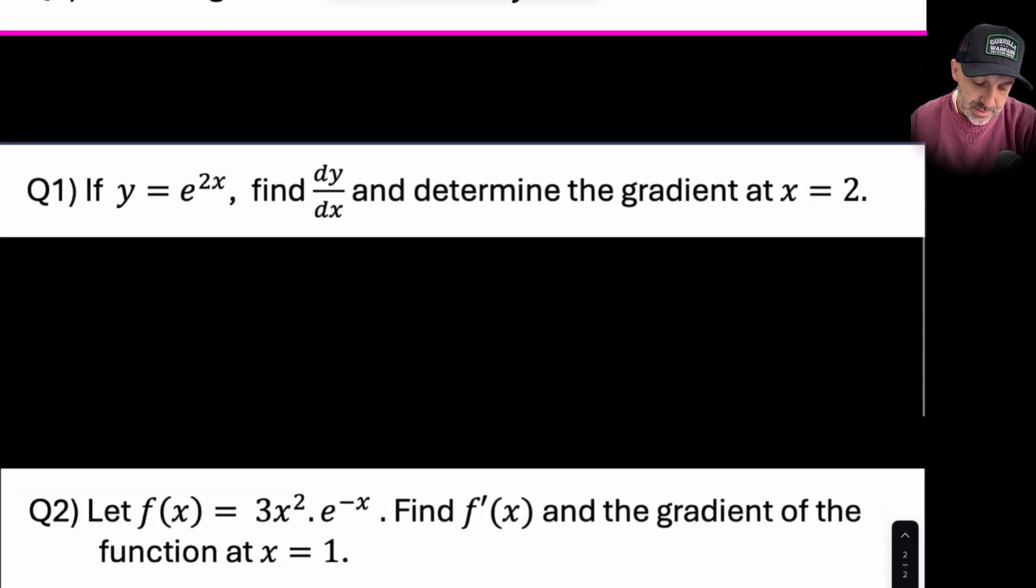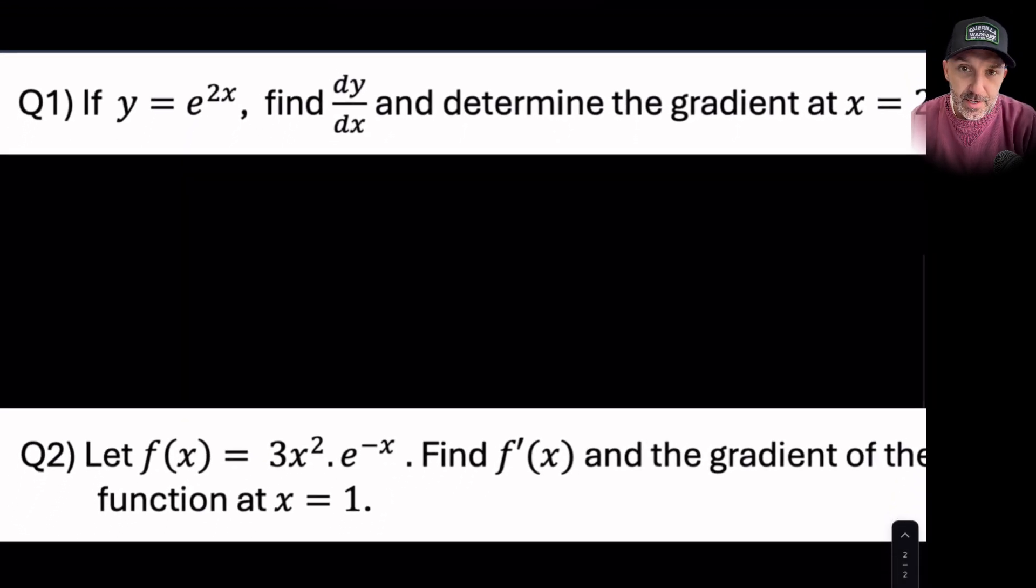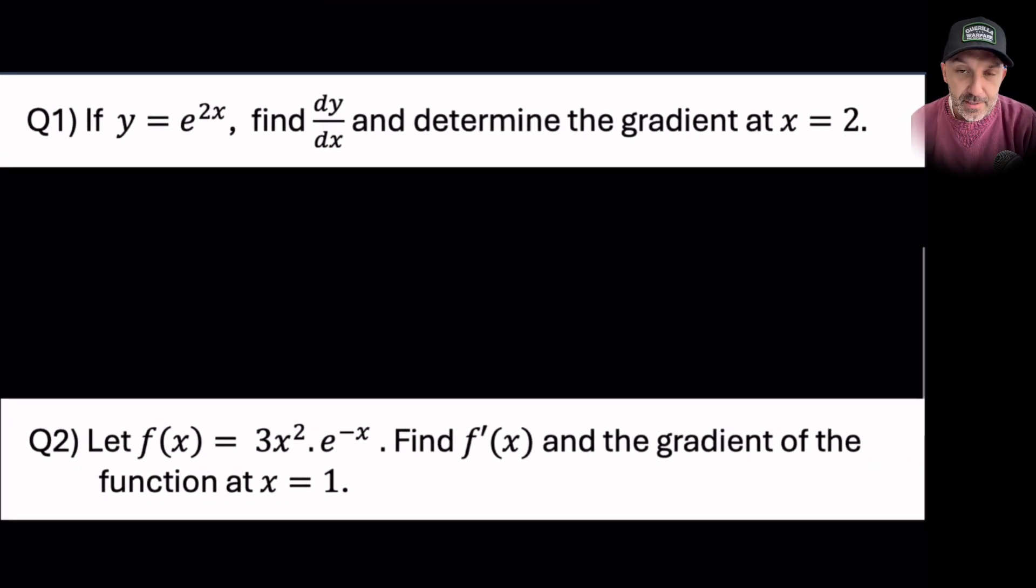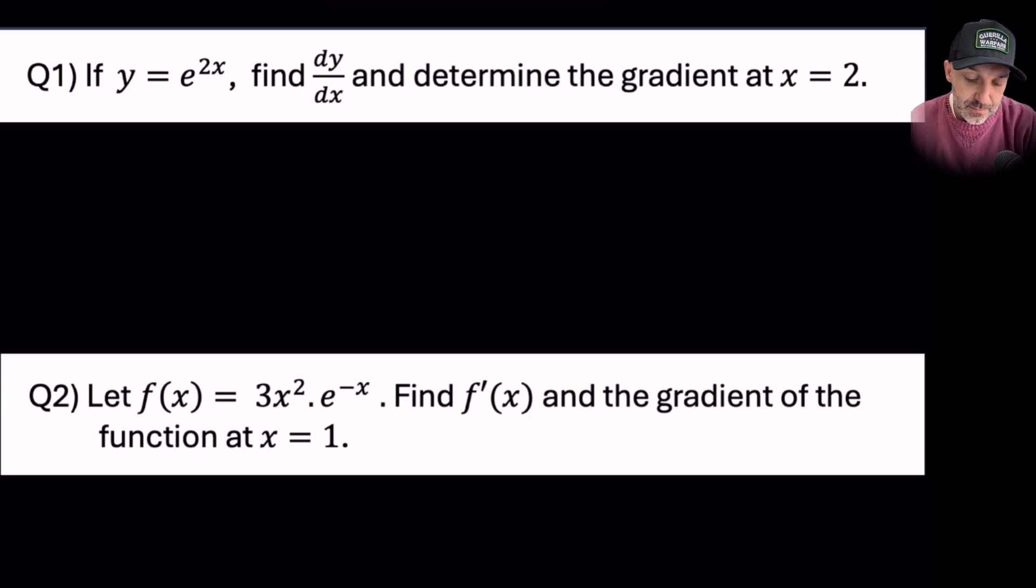Okay, so question one states: if y = e^(2x), then find dy/dx and determine the gradient at x = 2. So I said above, just simply think of this as e^(f(x)), so e^(2x), and then the derivative of y is e^(2x) times by the derivative of the power. And the derivative of the power is simply 2.